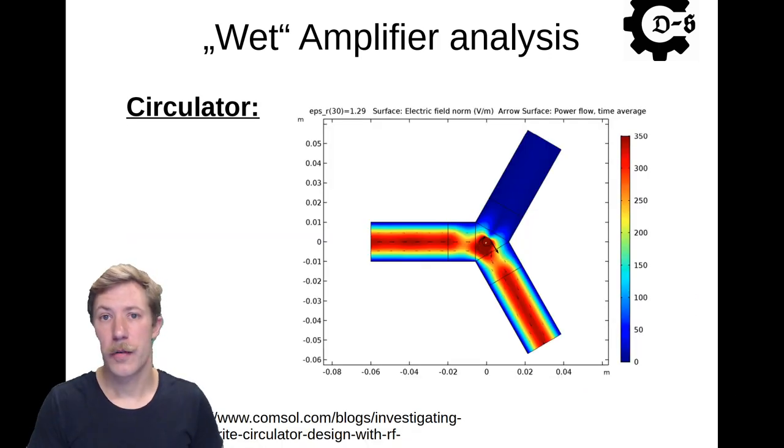Michael also included an illustration of a FEM analysis of the magnetic properties of a circulating isolator. And we can see here that the magnetic field does propagate the signal from one leg and only out the other.